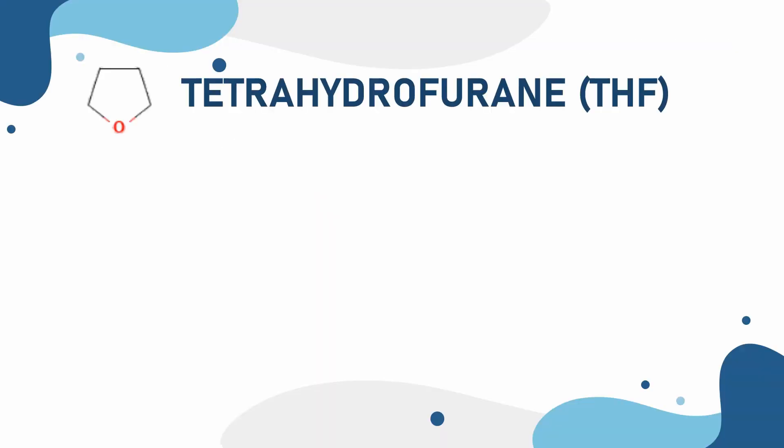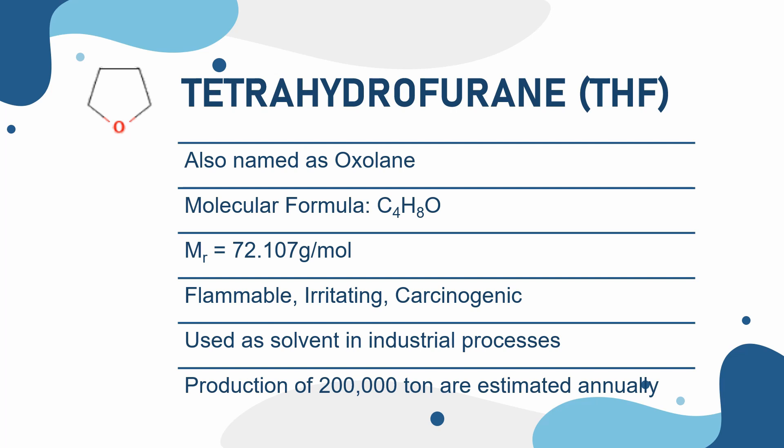Tetrahydrofuran has a shape of cyclic ether. It is also named as oxalene, with molecular formula C4H8O and molecular weight of 72.107 grams per mole.